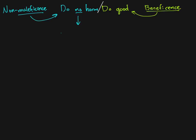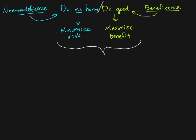A more realistic framing is that we are trying to minimize risk, and on the flip side we are trying to maximize benefit. You can view this as a balance — weighing these two sides. Sometimes we talk about this as a cost-benefit ratio: do the costs or risks outweigh the benefits, or do the benefits outweigh the costs?